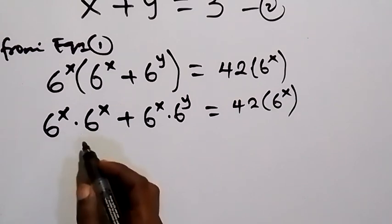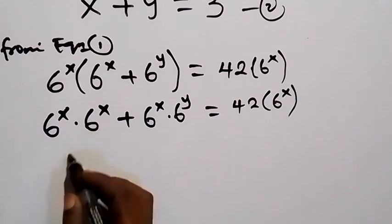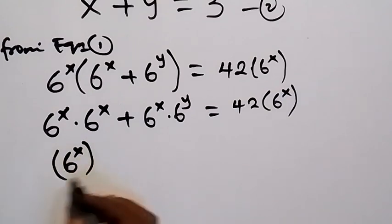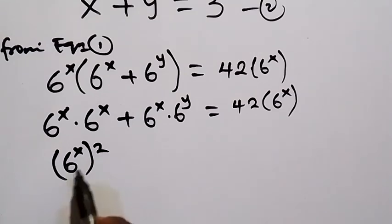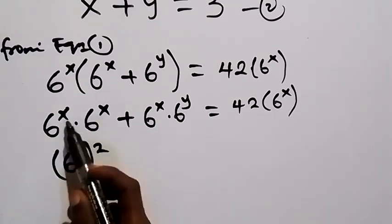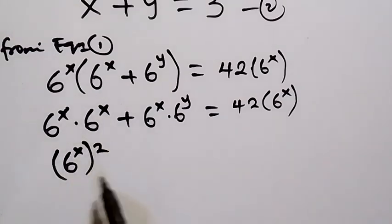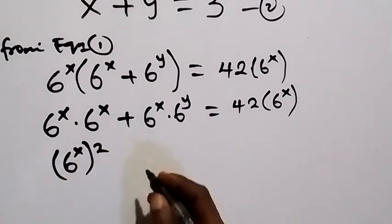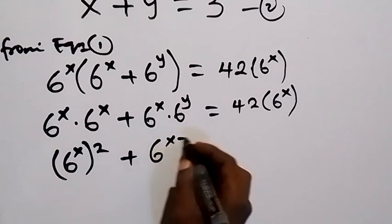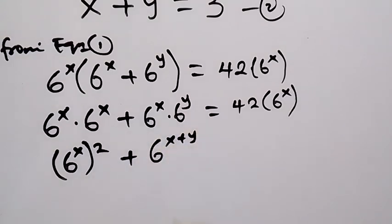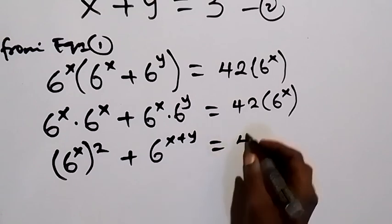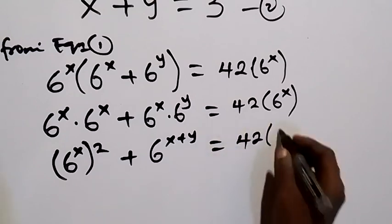From here we can write 6 raised to power x times 6 raised to power x as 6 raised to power x squared, which is the same as 6 raised to power 2x — because from the law of indices, x plus x is 2x. Then we have 6 raised to power x plus y, also from the law of indices, which equals 42 times 6 raised to power x.